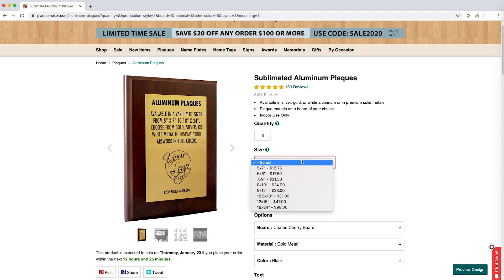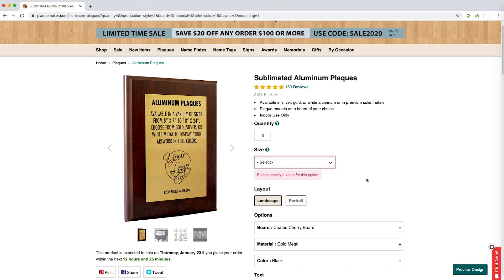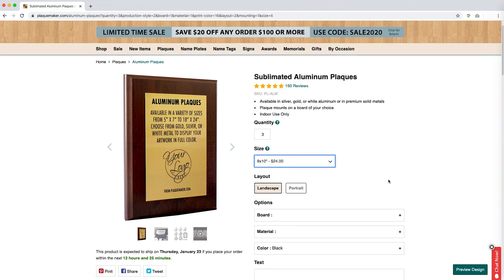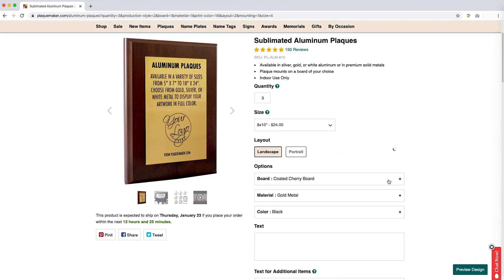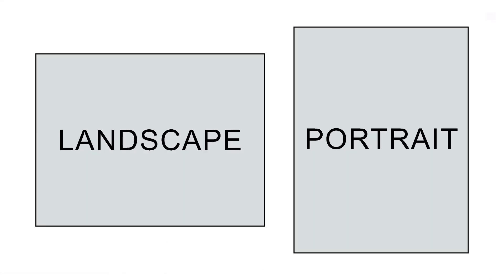While the order forms differ from product to product, you will likely be able to select the size and layout. With Landscape, the product will be larger from right to left, and Portrait Orientation will be the largest vertically.